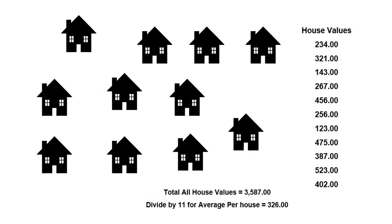A lot of times people will ask us why we use median instead of average in our travel videos, and a lot of other people use median too. Well, let's look at this picture — we have 11 houses, and on the right is the value of each house. If we take and add them up and divide them by 11, it gives us an average price of $326.